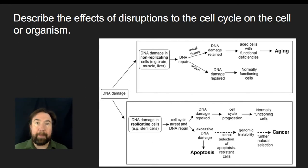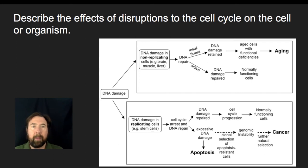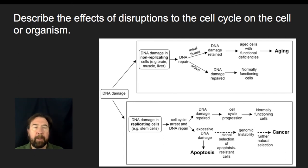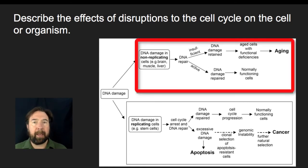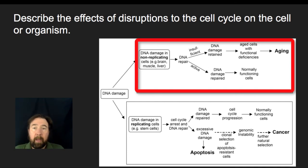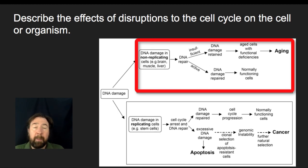What happens if there's some sort of damage? If there are disruptions to the cell cycle, one of the key things we often see is DNA damage. DNA damage in non-replicating cells — such as nerve cells or muscle cells — can either be repaired so that the cell proceeds functionally, or if the DNA repair doesn't quite work, this might ultimately lead to tissues aging or appearing to be aged.